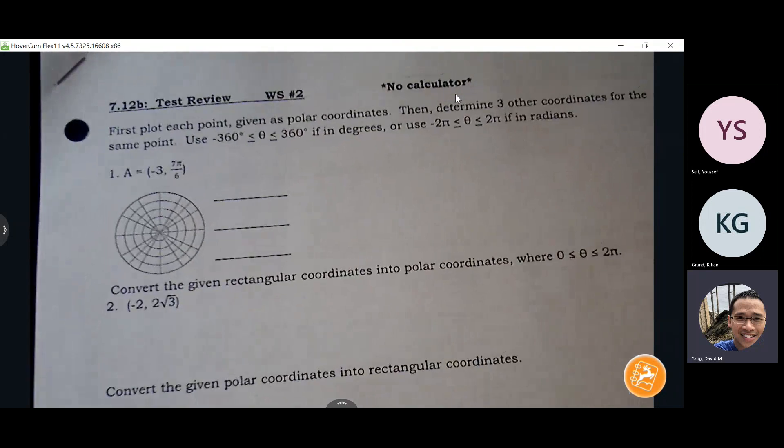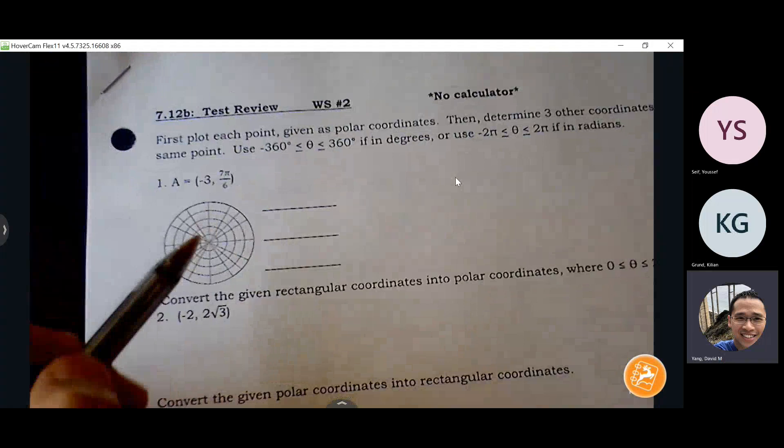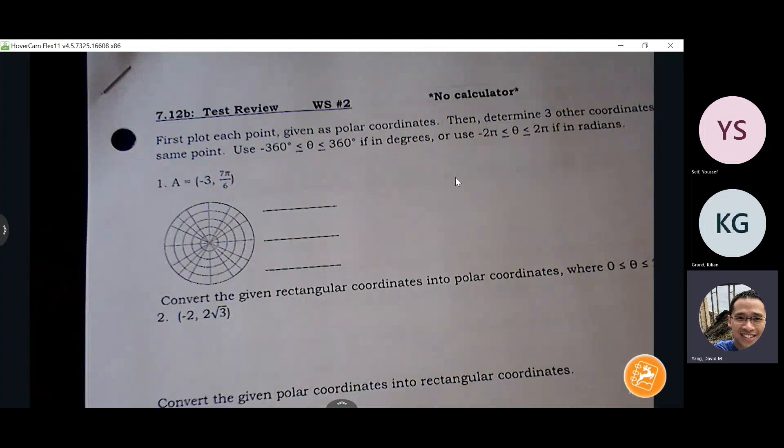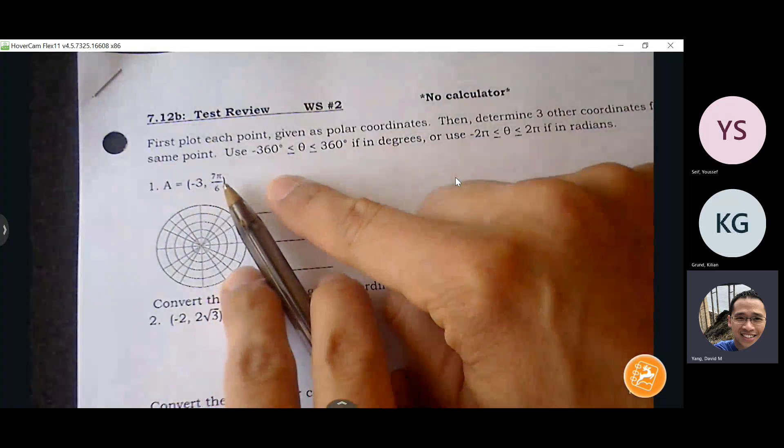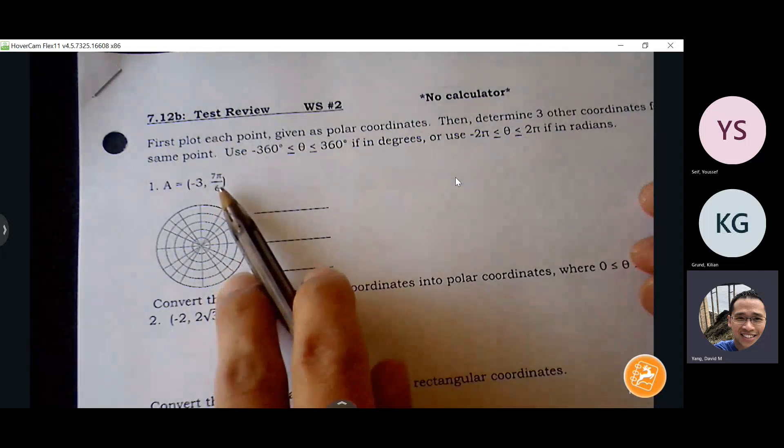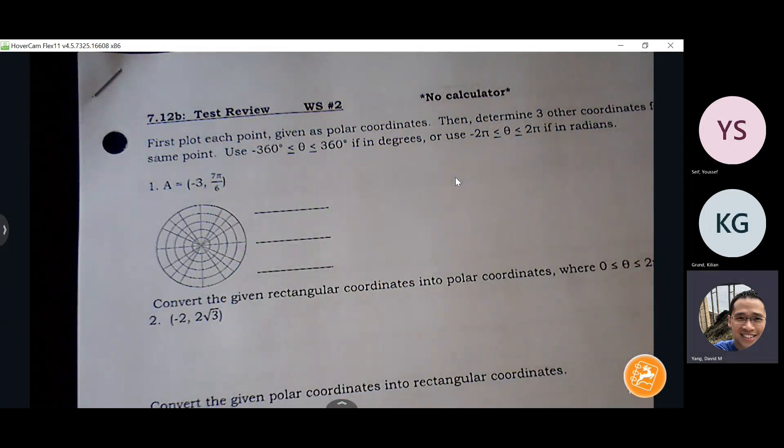So understand that we're all trying to create three other ordered pairs that all hit the same location. We always look at the theta first, so we can kind of have an idea where we're dealing with. So seven pi over six, where's this located?